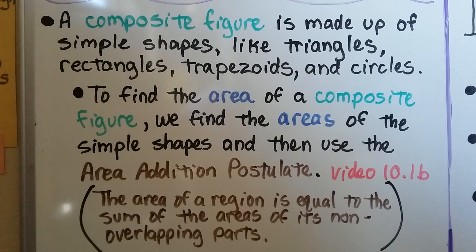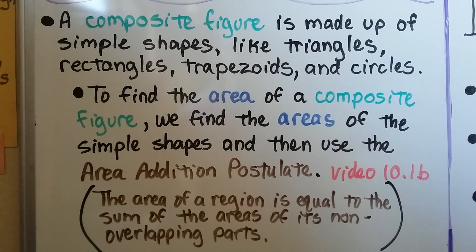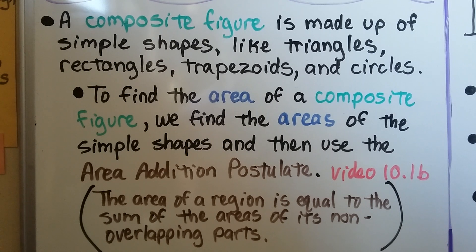A composite figure is made up of simple shapes like triangles, rectangles, trapezoids, and circles. To find the area of a composite figure, we find the areas of the simple shapes and then use the area addition postulate. We learned about that in 10.1b. The area addition postulate says the area of a region is equal to the sum of the areas of its non-overlapping parts.